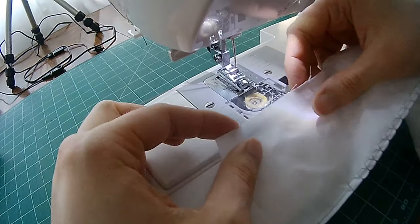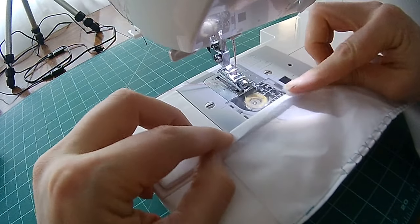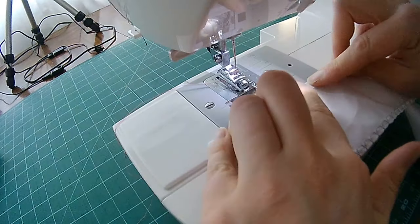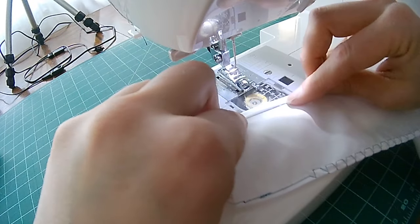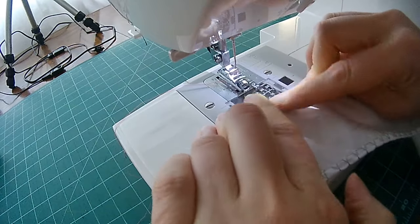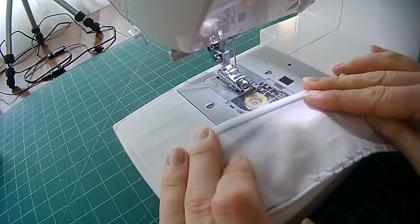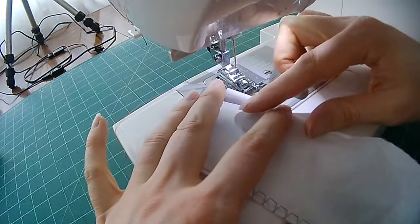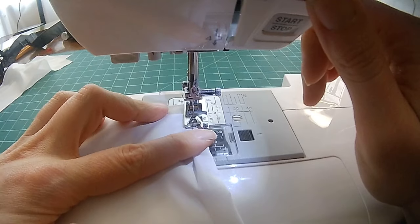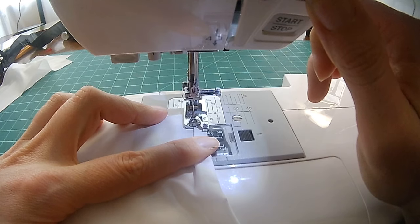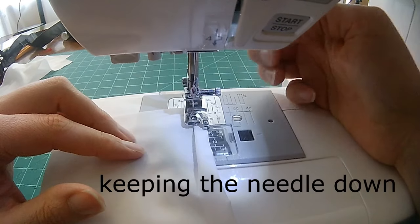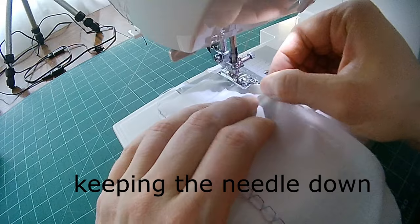All right, so the first thing I do is I just finger press my rolled hem in place because the first few stitches you're going to be sewing without it going through the funnel of the foot. So I get that pressed down and then I put it underneath my foot. Now, I'm going to take a few stitches forward and then a few stitches back just to start that seam. Then I'm going to raise my foot and pull my fabric up into that cone.